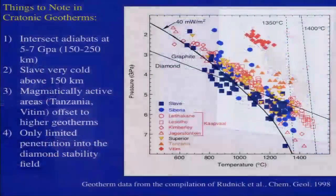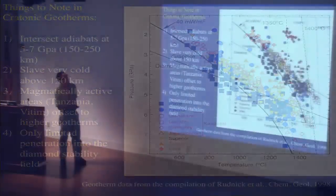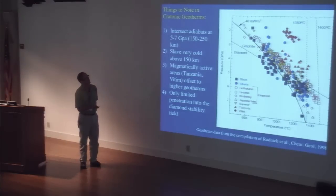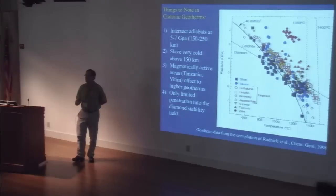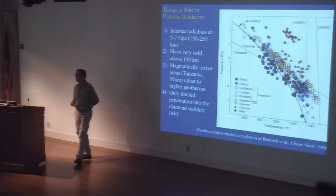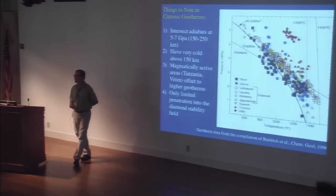Looking at a compiled dataset: the Slave craton is at the low-temperature side, the Kaapvaal is the reference, Tanzania is offset to much higher temperatures — consistent with its location in the volcanically active East African Rift zone. Vitim from the Siberian craton, near the Baikal Rift, is also offset to higher temperatures. When you're near recently volcanically active areas, the mantle lithospheres tend to have elevated temperatures.